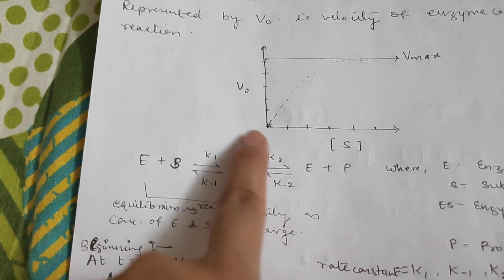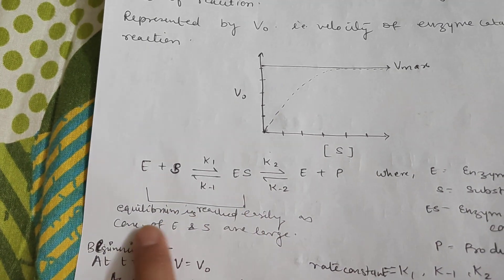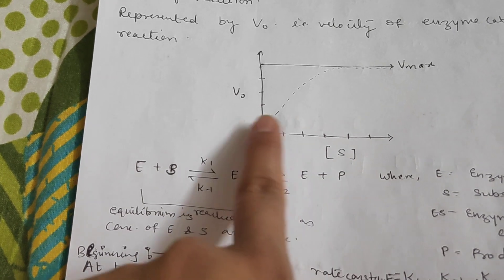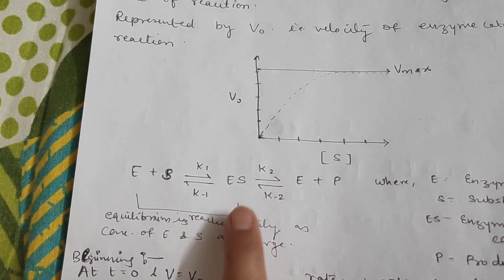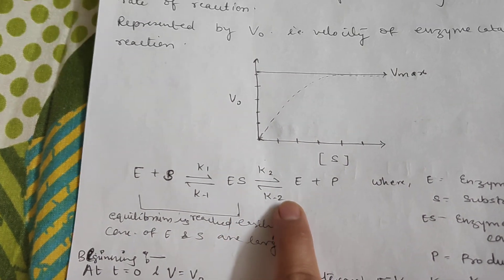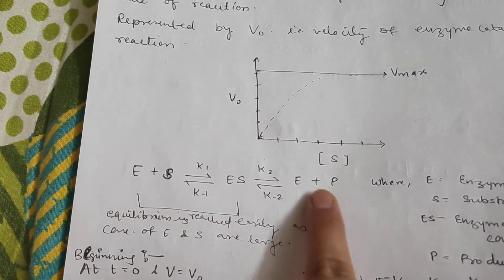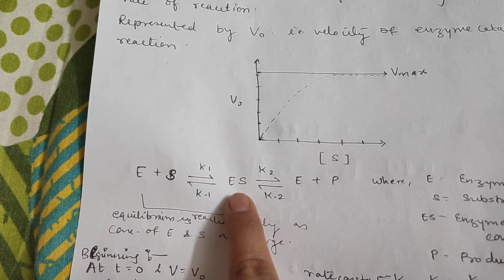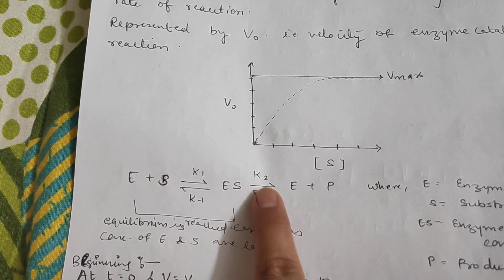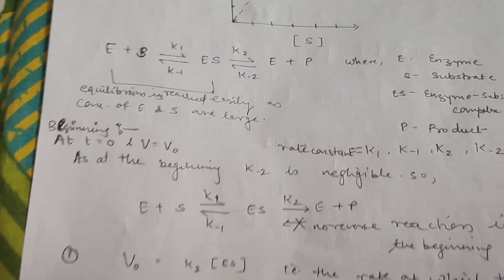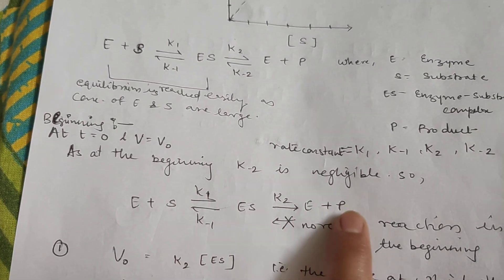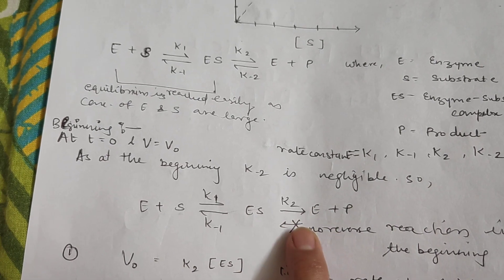Mainly in the first half of the reaction it is easy to reach equilibrium because the product concentration is negligible when time is T=0. Therefore we can neglect the K-2 step, that means the reverse reaction of enzyme-product complex going back to the enzyme-substrate complex ES. So we simplify the reaction as: E + S ⇌ ES (with K1 and K-1), and ES → E + P (with K2), and the K-2 step is removed.